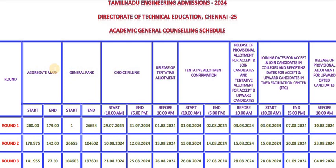There is one mark difference and there are a few students in that range. For 195 to 190, there are no changes. For 190 to 185, the cut-off will increase by 1 to 1.5 marks.